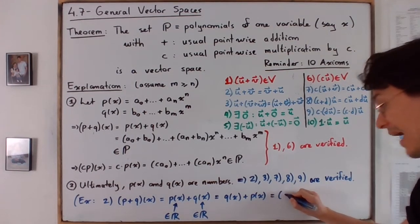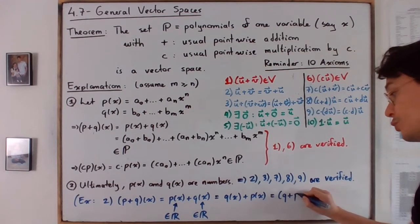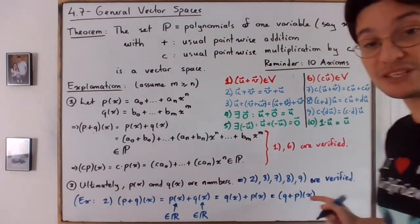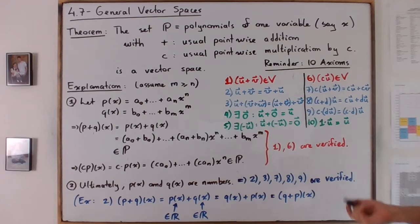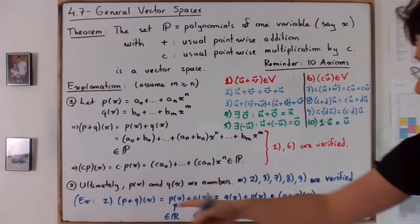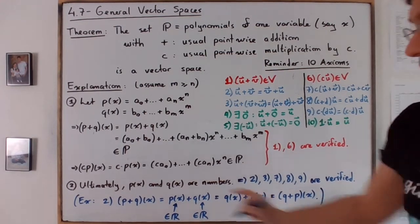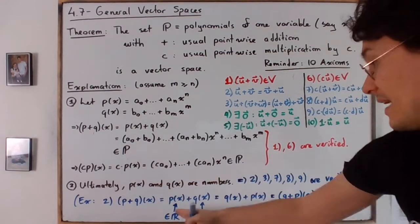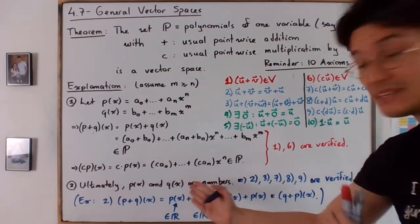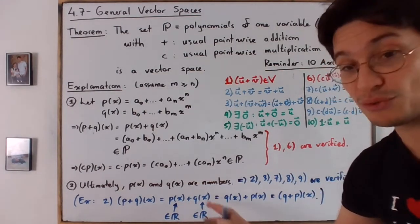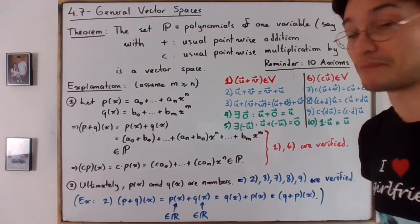And by the way, of course, this is true for every x, right? This is how pointwise addition and pointwise multiplication is defined. And as you can see, this is by definition, what is q plus p of x. And since x is arbitrary, it works for all of them. So this is, for example, how you would prove property number two. But if you understand how to prove property number two, it's going to be the same deal for all of them, right?